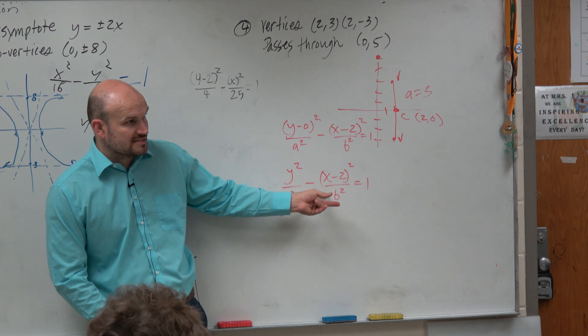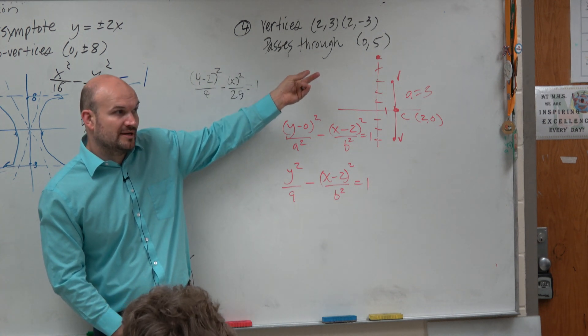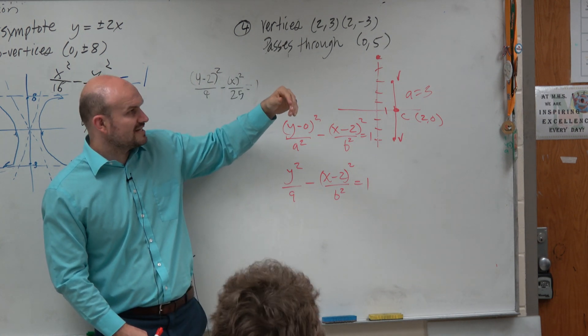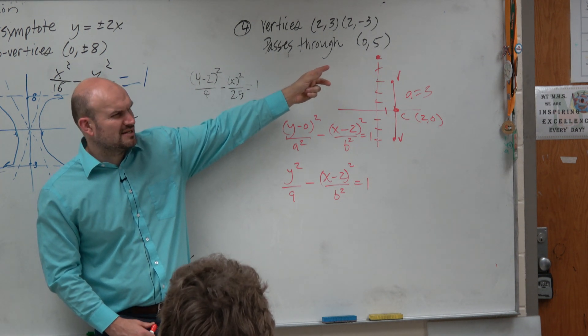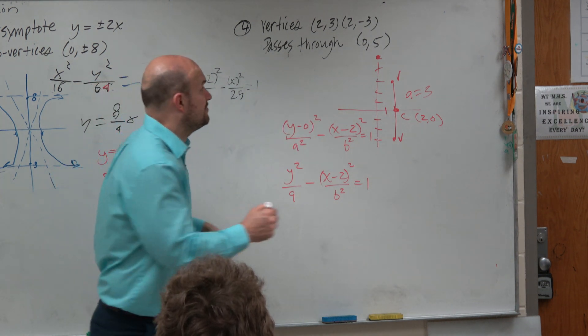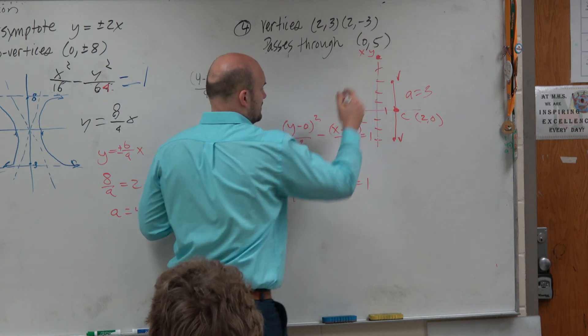Well, I need to figure out what b is. I don't have enough information right now to figure out b. But what other piece of information was I given? What is that 0, 5? What does that represent? That represents the coordinate points on your hyperbola.